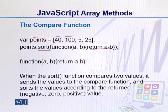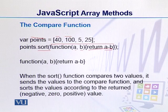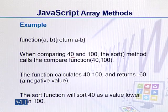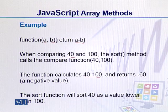The result can be negative, zero, or positive. The sort function will then decide where to place the value. For example, when we have 40 and 100, the compare function receives 40 and 100 as arguments. We calculate 40 minus 100, which returns a negative value. Due to this, the first value is considered lower than the second one, so it comes first.